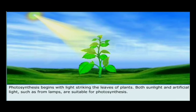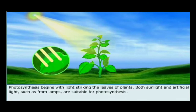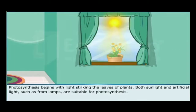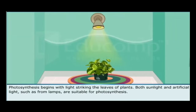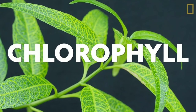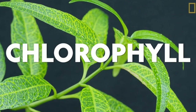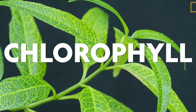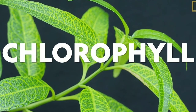Photosynthesis begins with light striking the leaves of plants. Both sunlight and artificial light, such as from lamps, are suitable for photosynthesis. Chlorophyll present in the green leaves absorbs the sunlight.